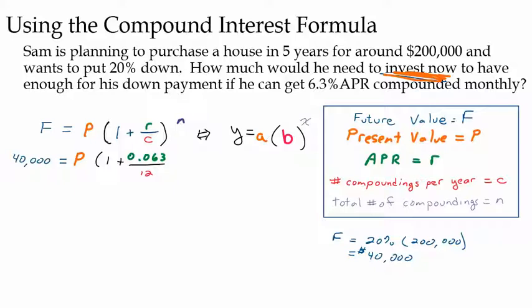Now, how many months is he going to have to do this? That's N, the total number of compoundings. He's going to do this every month for five years. So N is going to be every month, 12 months for five years, he's going to put this investment away for 60 months. So that's the total number of compoundings. That's basically it with the formula. So now what we're trying to do is solve this for P.